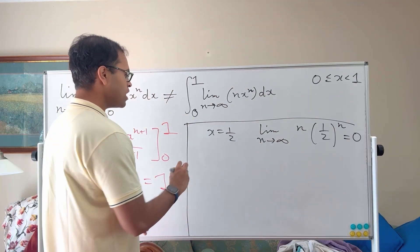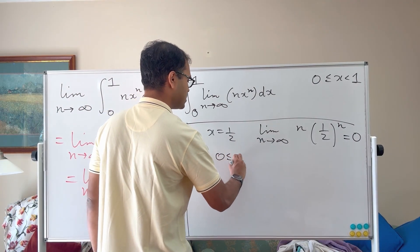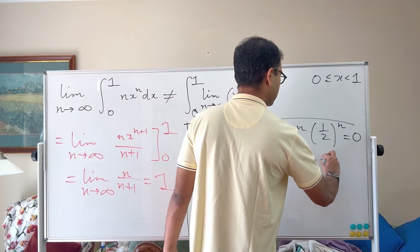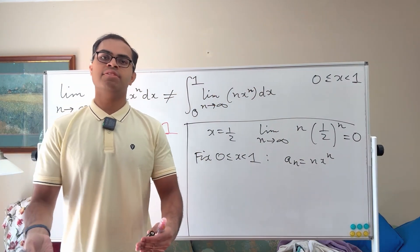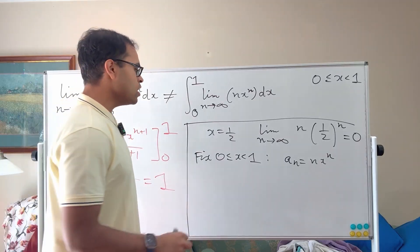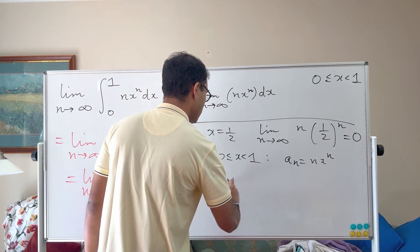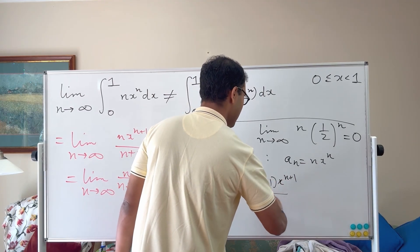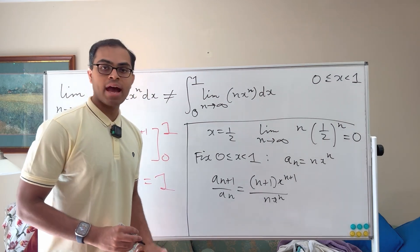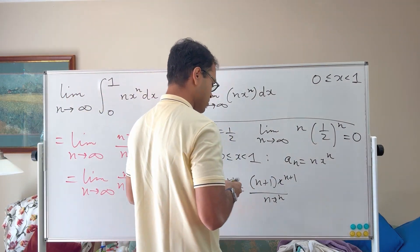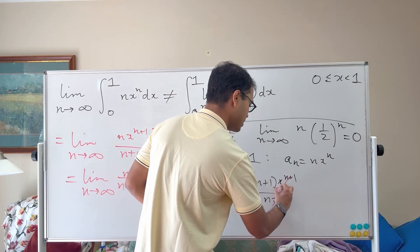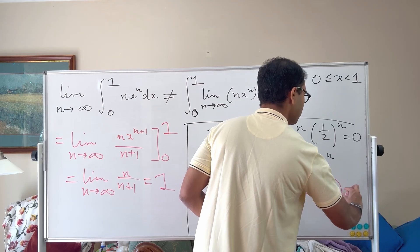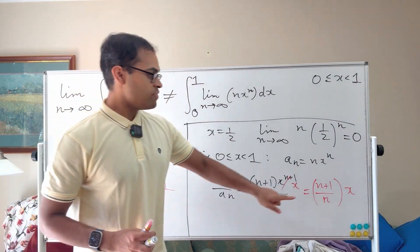But how do we prove it rigorously? Fix 0 ≤ x < 1, and define a_n = nx^n. Consider the ratios of successive terms: a_{n+1} / a_n equals (n+1)x^{n+1} divided by nx^n. Cancelling the x^n, we get (n+1)/n times x. That's the ratio.